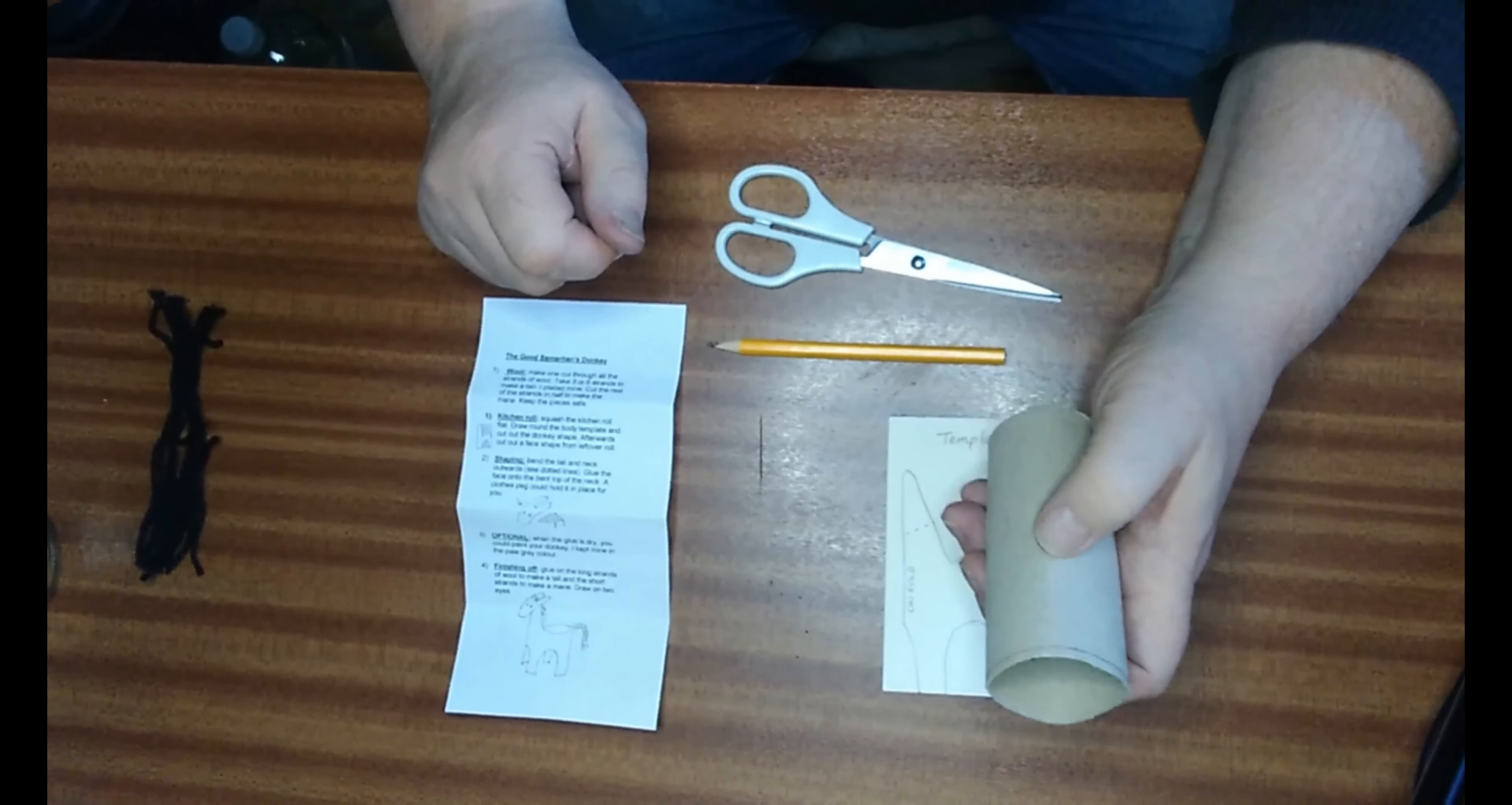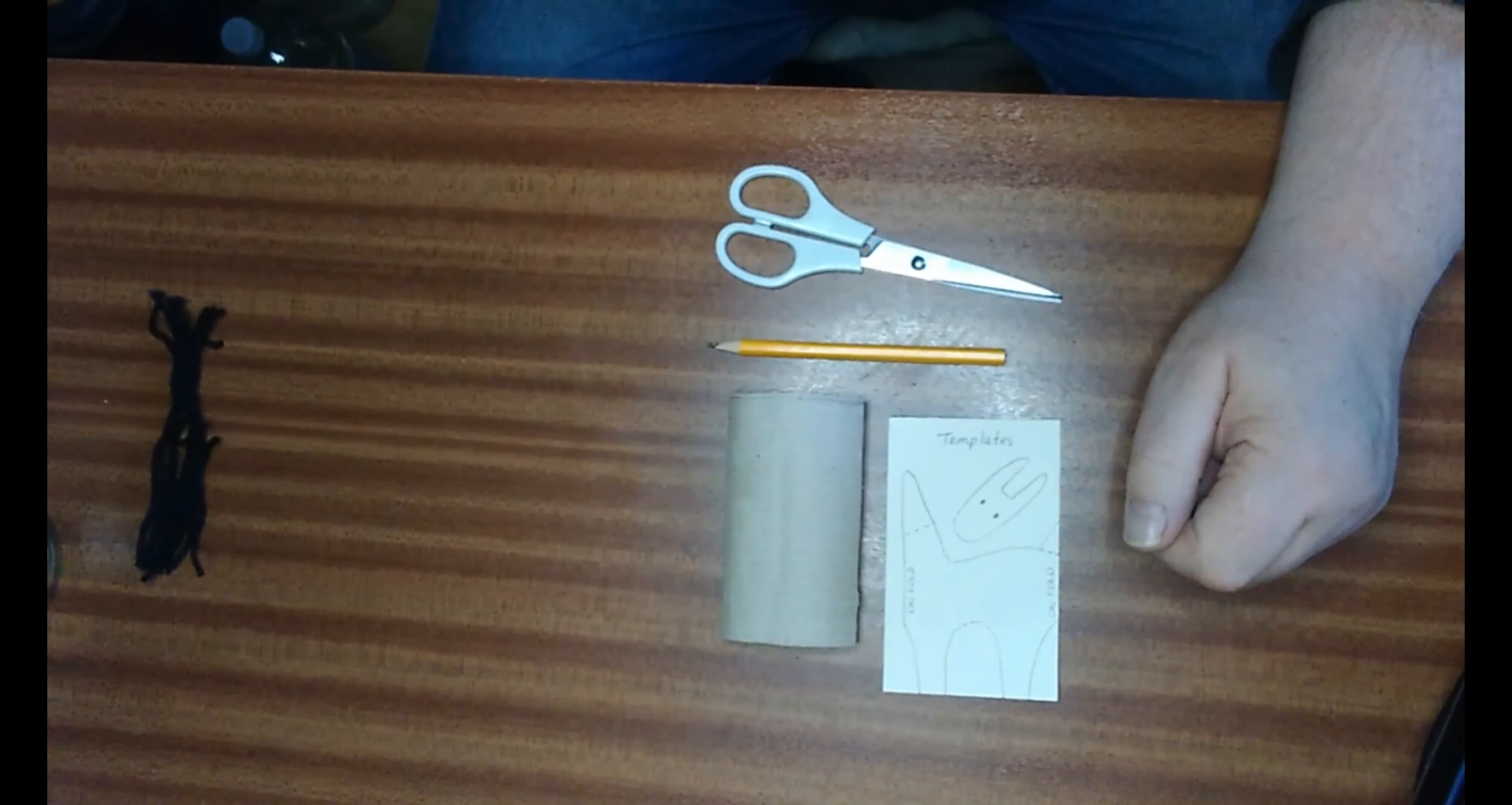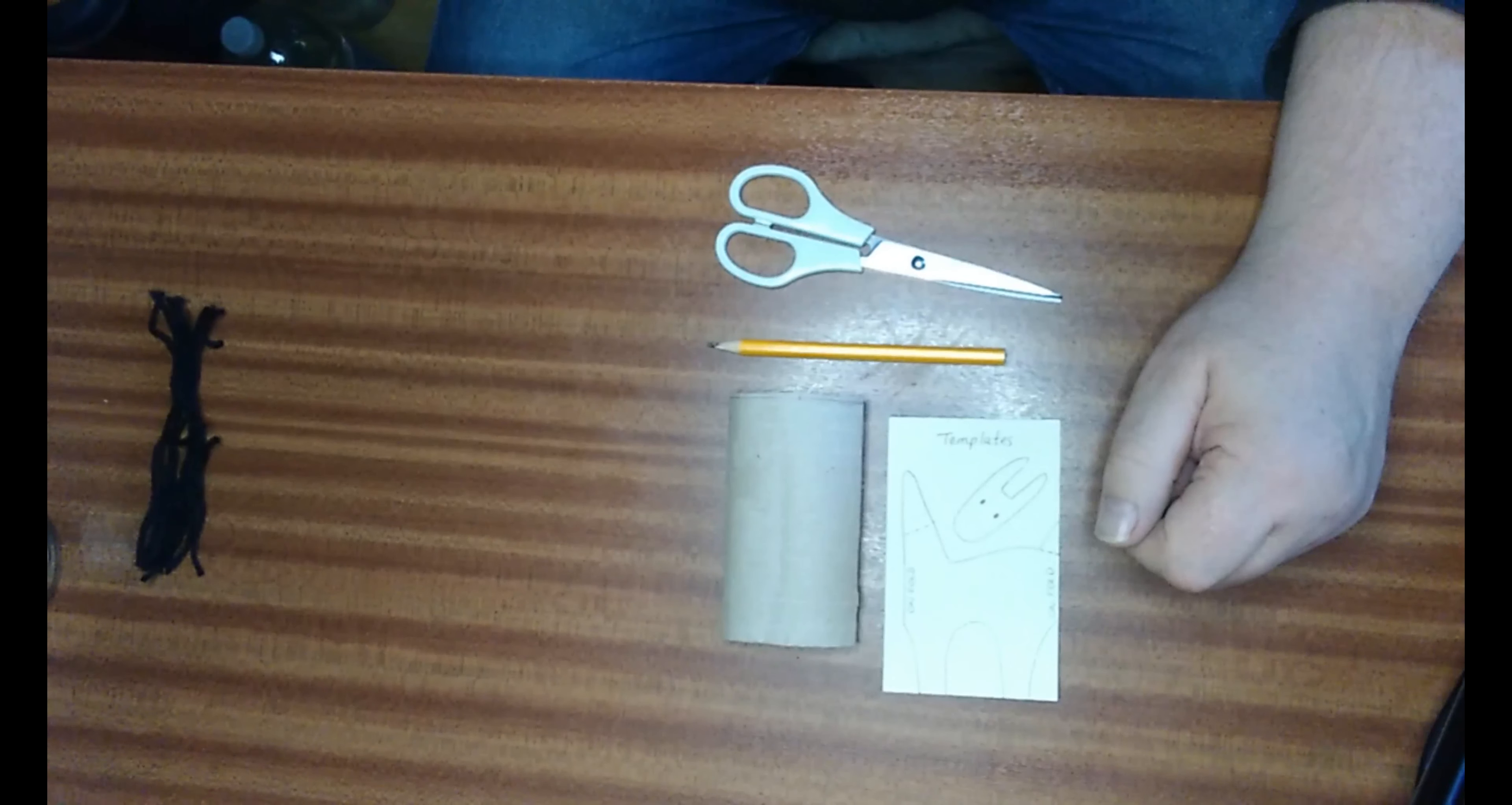We'll start by cutting the wool away from the tube. We're going to cut it into strands. Oops, one got stranded. And then put them aside until later.